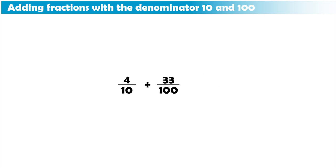What if we need to add two fractions that don't have the same denominator, such as 4 tenths plus 33 hundredths? How can we do that?